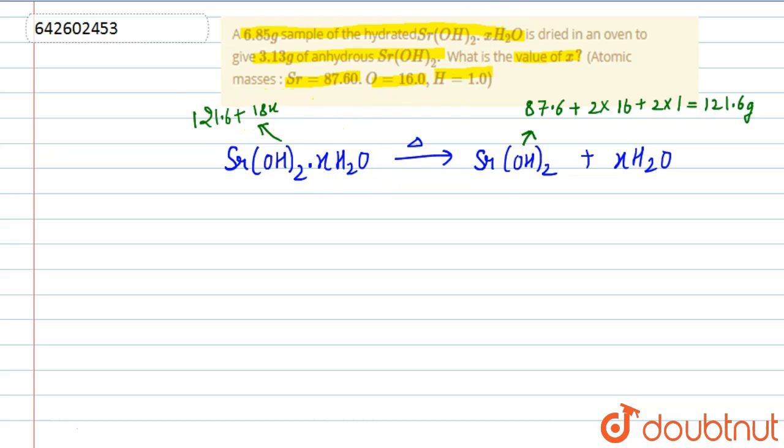So we are given that 6.85 grams of this is heated to get 3.13 grams of anhydrous Sr(OH)₂. Now according to law of conservation of mass, the water lost will be 6.85 minus 3.13, that is 3.72 grams.